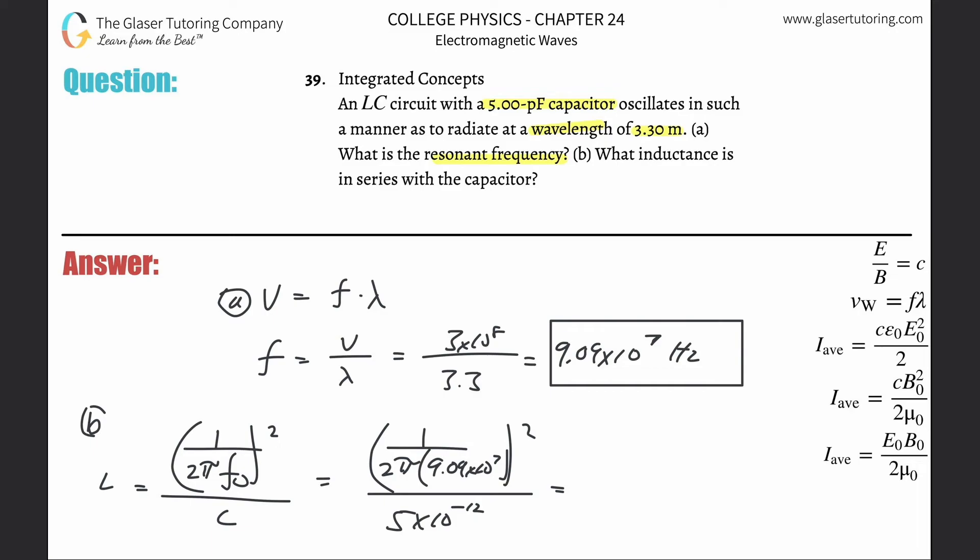So it's going to be 1 divided by, now parenthesis, 2π times that answer, okay? Square that result, and then divide that by 5 times 10 to the minus 12th. And the inductance here is going to be 6.13 times 10 to the minus 7th, and that's in terms of henrys.